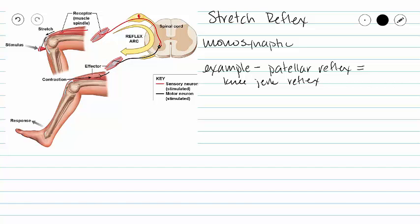This video is a continuation in our series on the spinal cord, and we are going to be covering a monosynaptic reflex called the stretch reflex. A monosynaptic reflex has only one synapse, which occurs between the sensory neuron and the motor neuron. That sensory neuron comes all the way down to the anterior gray horn to synapse directly onto a motor neuron.